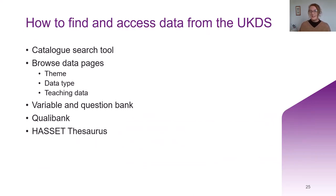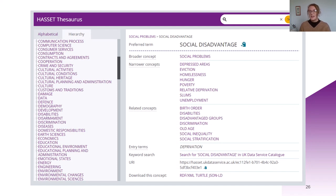Finally, we have the Hassett thesaurus. This search tool contains key social science terms and related concepts. For example, we can see that 'deprivation' has been categorised under social disadvantage. You can narrow this down into a more focused concept like homelessness, poverty or relative deprivation, or look at related concepts. If you want to conduct a search for this term in the catalogue, you can just click next to the keyword search section and it will take you to a search for social disadvantage in the catalogue.